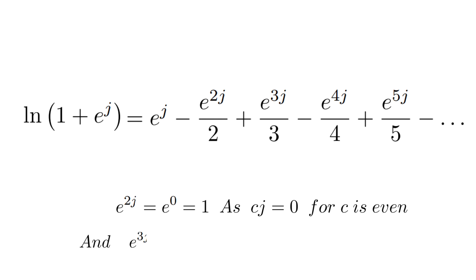When we cube e raised to the power of j, we get e raised to the power of 3j, which simplifies to e raised to the power of j itself. But this equals negative 1 because of the behavior of j when raised to an odd power. In other words, e raised to the power of 3j equals e raised to the power of j, and that equals negative 1.